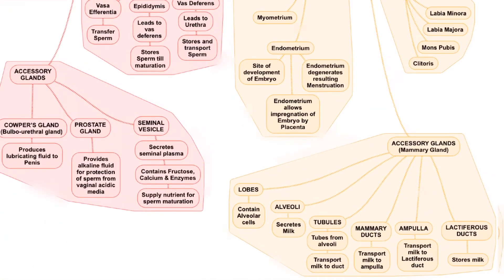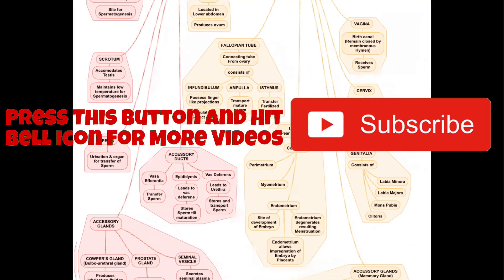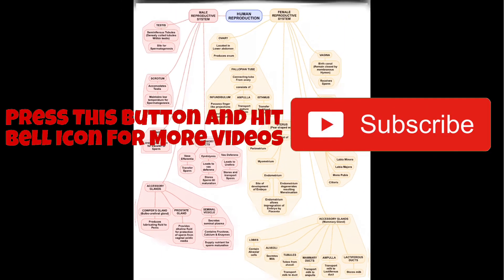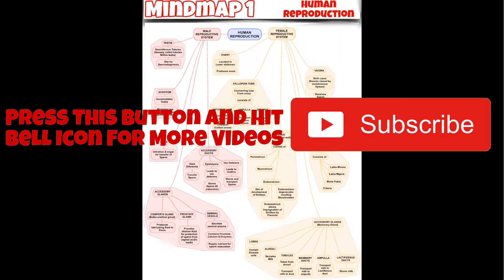Don't get confused between the ampulla of the mammary gland and the ampulla of the fallopian tube. One transports mature sperm, while the other transports milk to the lactiferous duct. This was the flowchart of the parts of the two reproductive systems. The next flowchart will be uploaded soon.